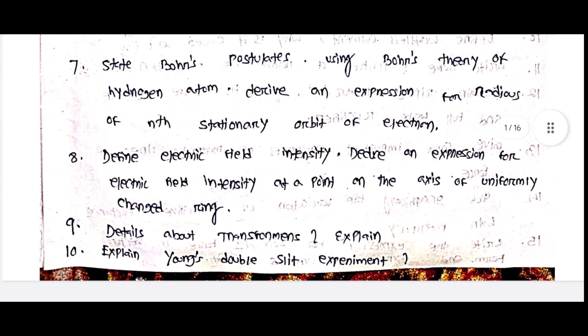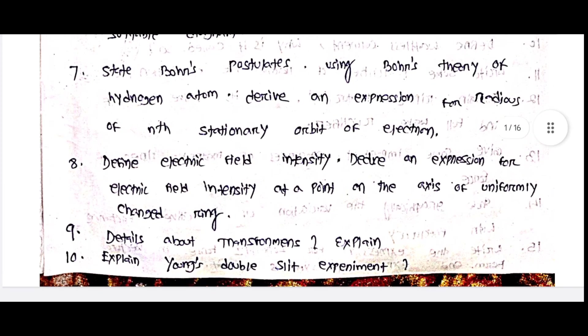State Bohr's postulates. Using Bohr's theory of the hydrogen atom, derive an expression for the radius of the nth stationary orbit of an electron. Next, define electric field intensity.